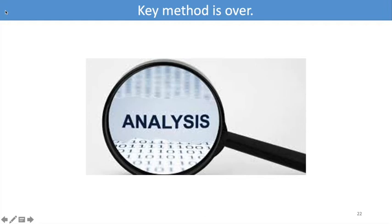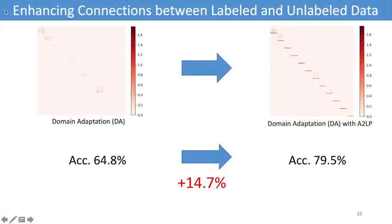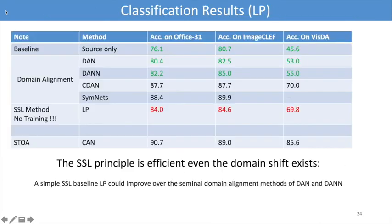Now comes the analysis and results. We can intuitively observe that the connections between labeled and unlabeled data are enhanced and the classification results are improved significantly. We also evaluate on standard benchmark datasets. Our vanilla semi-supervised learning algorithm label propagation can achieve better results than the seminal domain alignment methods of DAN and DANN. Note that the results of label propagation are based on feature representations pre-trained on the ImageNet dataset.